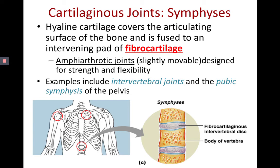The pubic symphysis is both amphiarthrotic — slightly movable — and connects bones with fibrocartilage. All symphyses use fibrocartilage to connect bone, and all symphyses are slightly movable, so they're amphiarthrotic. We have strength and flexibility — that's why there's a little bit of movement allowed in the vertebral column and in the pelvic bone. Just like synchondroses meant hyaline cartilage and are immovable, symphyses mean fibrocartilage and are amphiarthrotic.